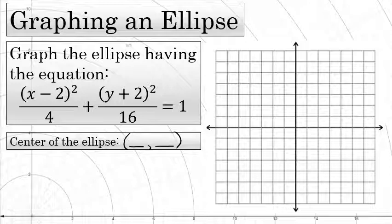Therefore, the x coordinate of the center of the ellipse is 2. That's the value that's subtracted from x in the equation.